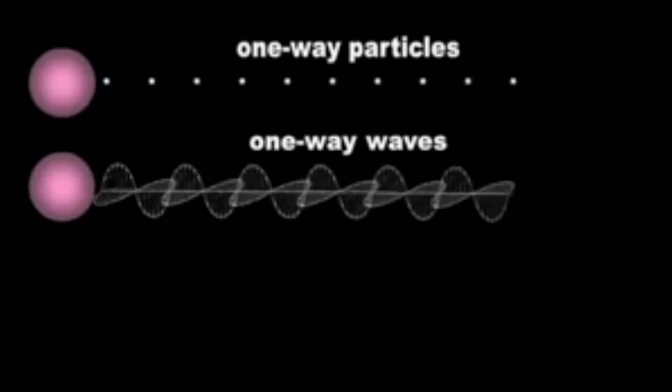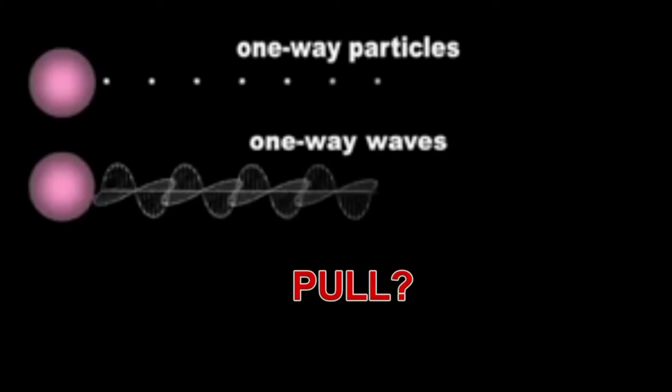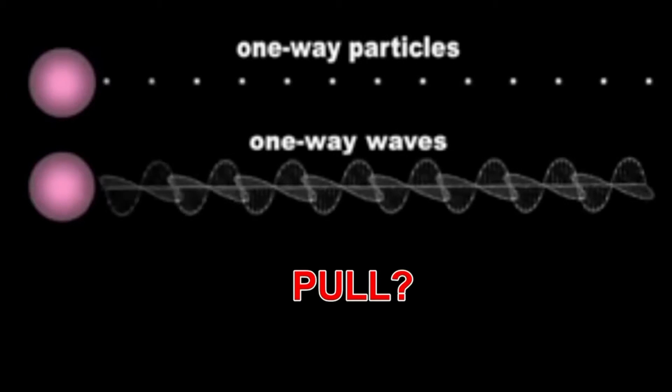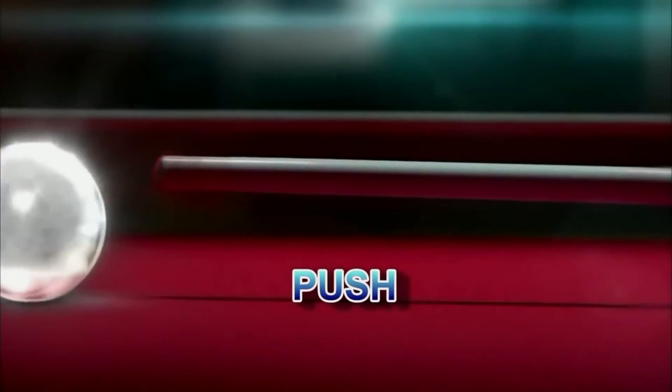They are one-way mechanisms. They can only travel in one direction. And they cannot generate pull. Discrete, one-way billiard balls can only push. In contrast, the rope hypothesis proposes that two atoms are bound together by a pair of twined DNA-like threads.